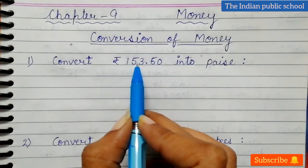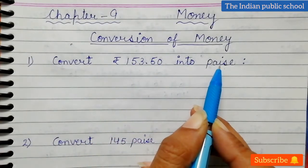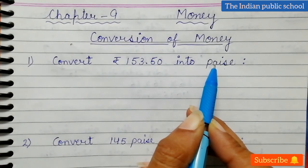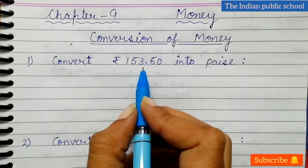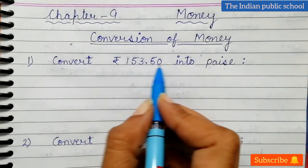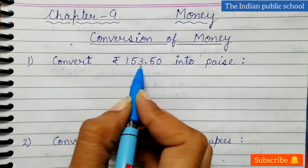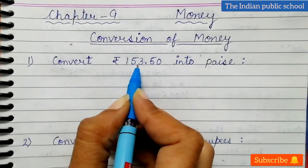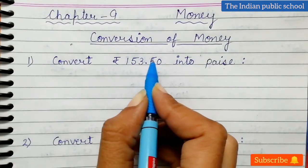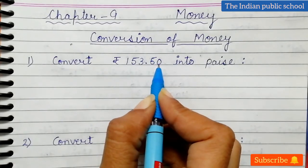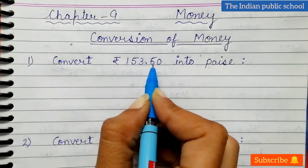The first question is: convert 153 rupees 50 paisa into paisa. I told you, we separate rupees and paisa by this dot. The first part before the dot is in rupees and the second part after the dot is in paisa. So here is 153 rupees and 50 paisa.